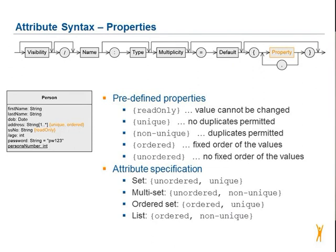The last section of the building plan is the optional properties, set between curly brackets. The predefined properties are read-only, unique, non-unique, ordered, and unordered.